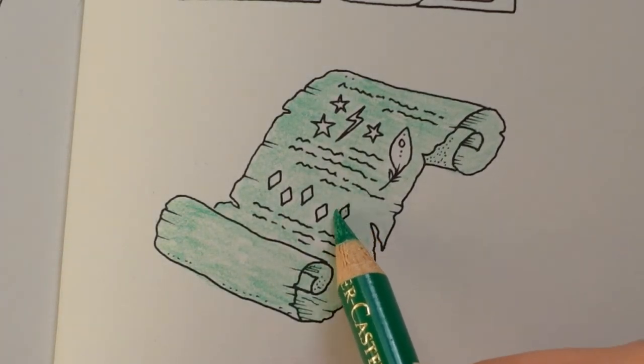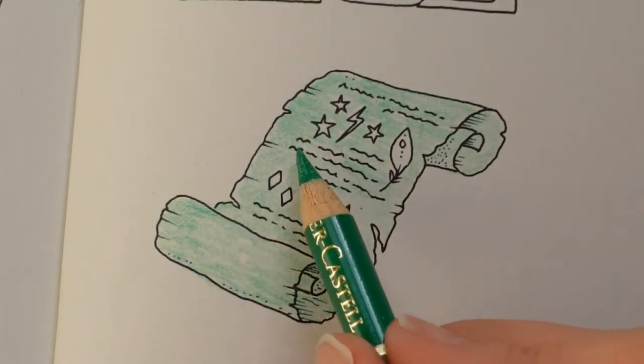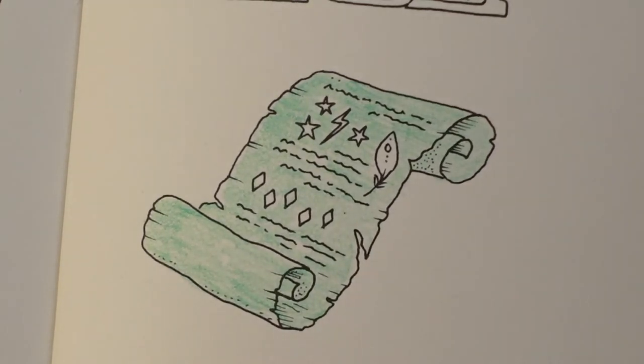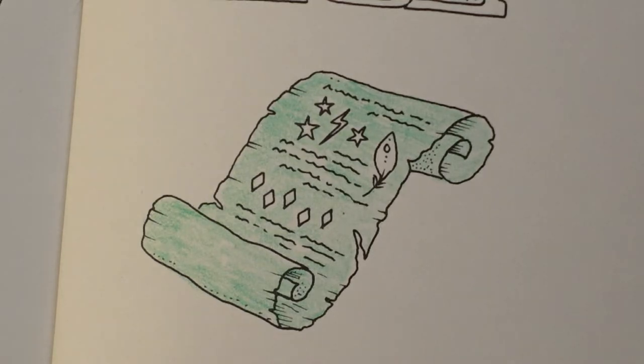Now I think the easiest thing to do with these is to actually color the details now and then go back and tidy up the green after. So, the stars, I'd like to be very bright.